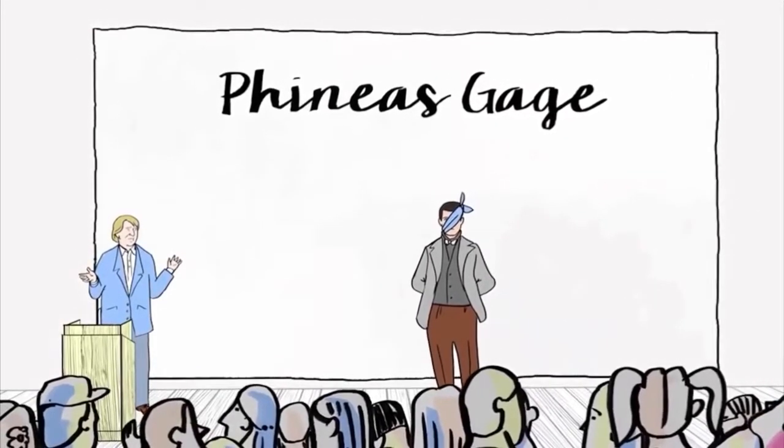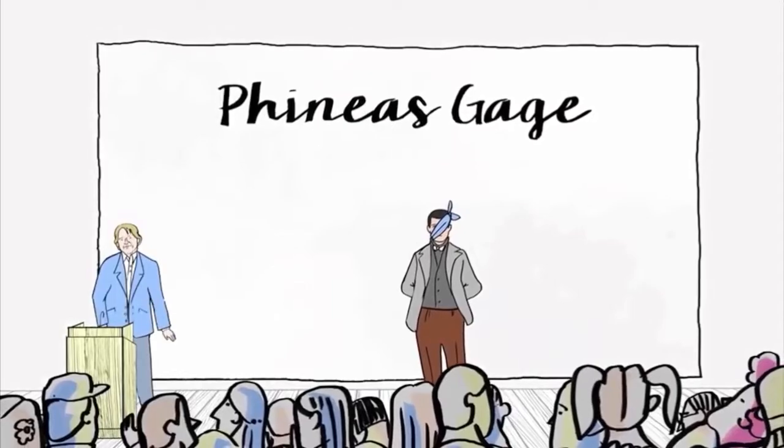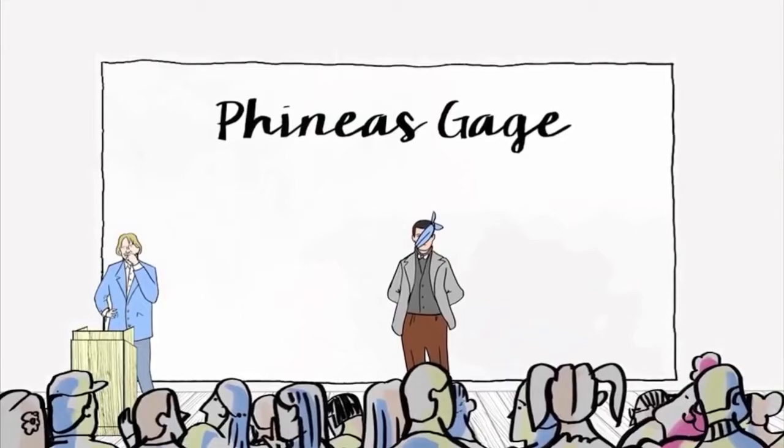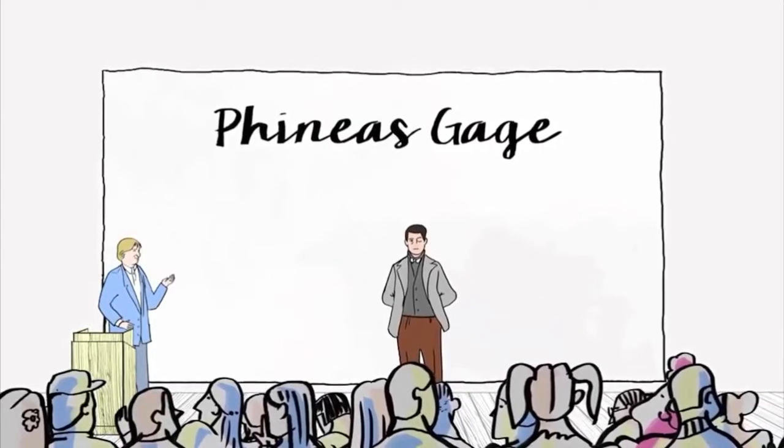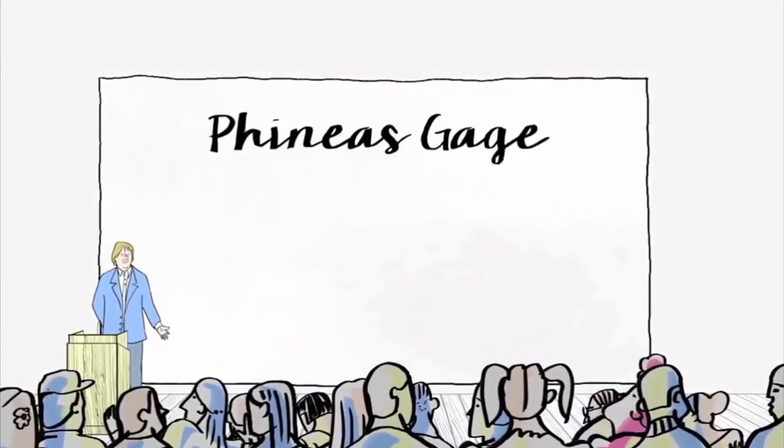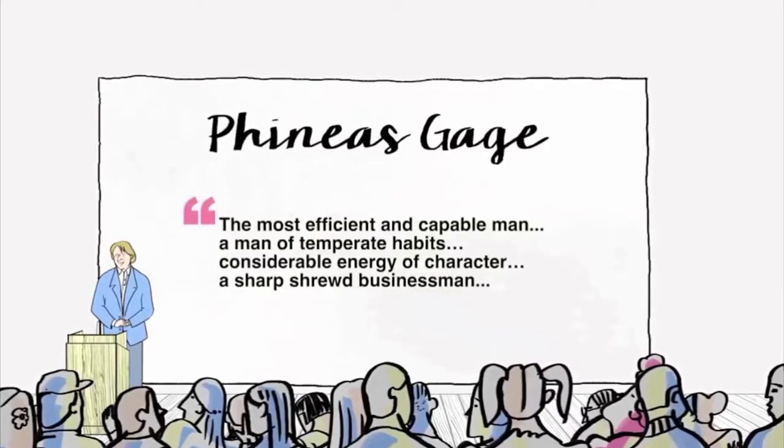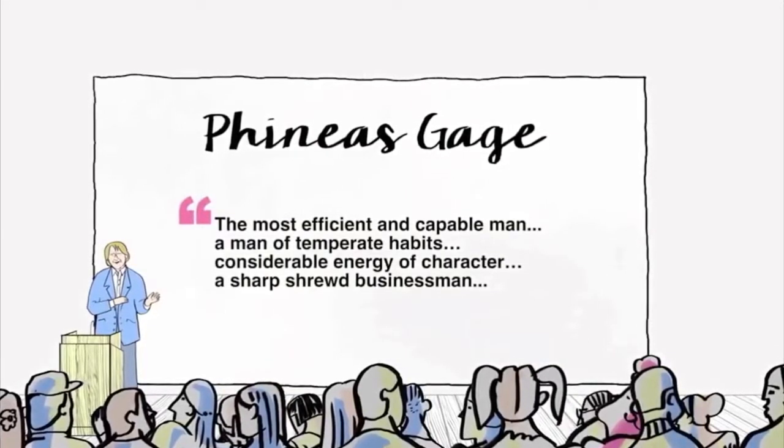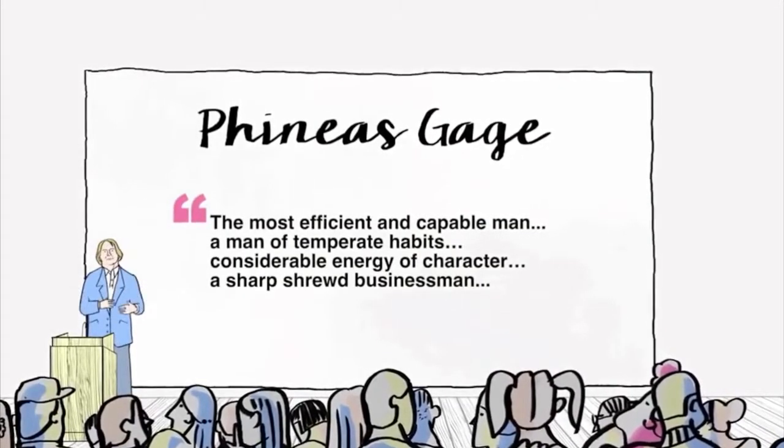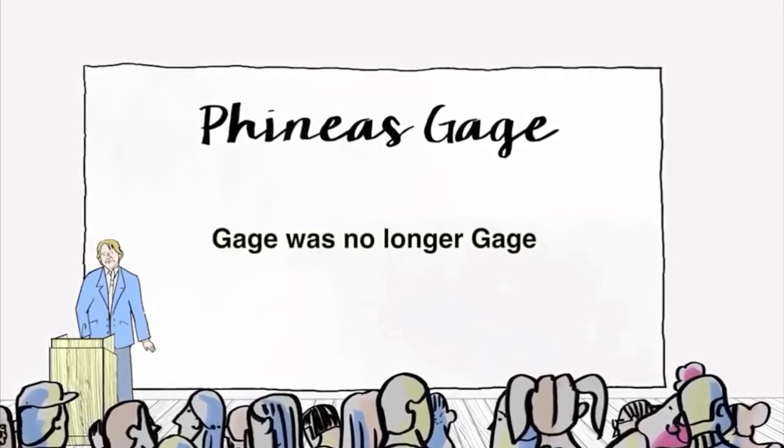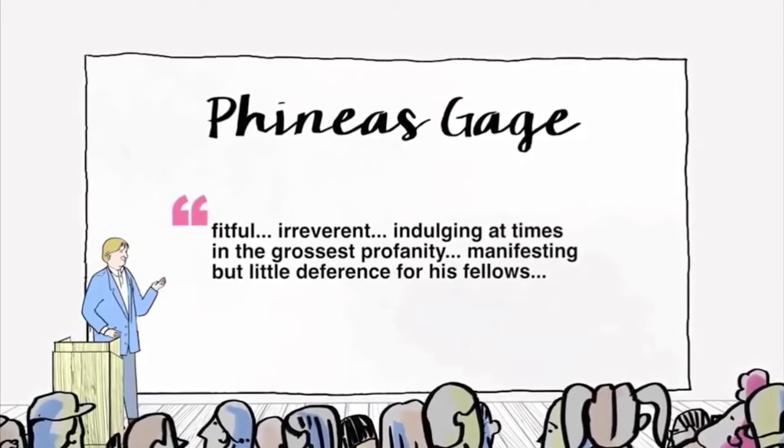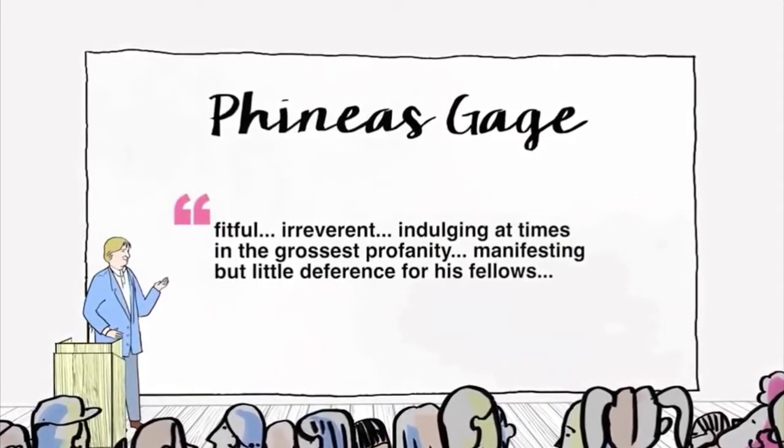But in another sense, Gage was very unlucky, because Gage had been transformed by this incident. Someone who knew Gage described the transformation like this: Before the accident, Gage was the most efficient and capable man, a man of temperate habits, considerable energy of character, a sharp, shrewd businessman. After the accident, Gage was no longer Gage.